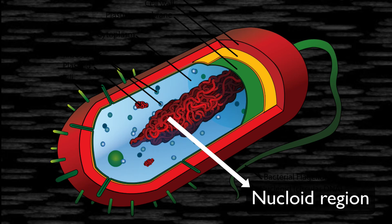The basic difference between prokaryotes and eukaryotes is that prokaryotes do not contain a nucleus. In eukaryotes, the nucleus contains the genetic material — DNA and chromosomes. In prokaryotes, the nucleic material is coiled and concentrated in a region of the cell known as the nucleoid. This region in the cytoplasm contains DNA and RNA.